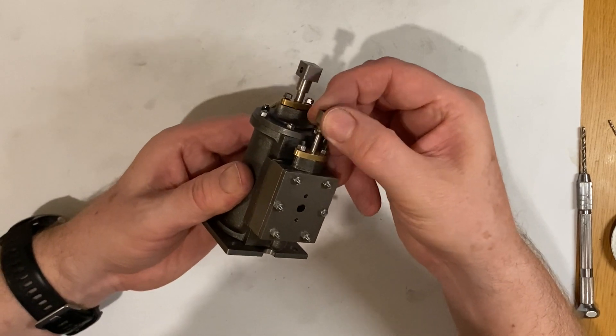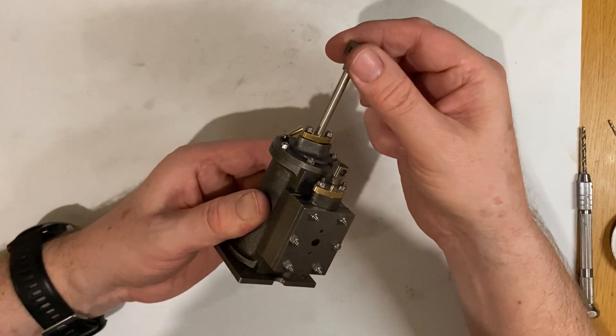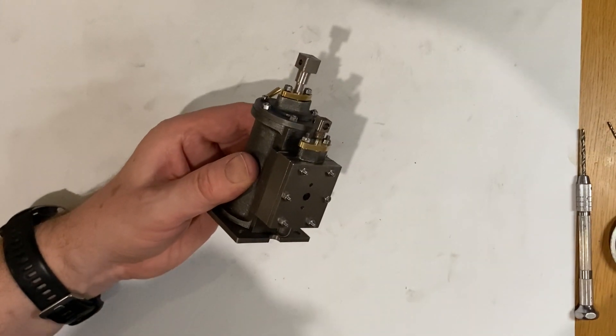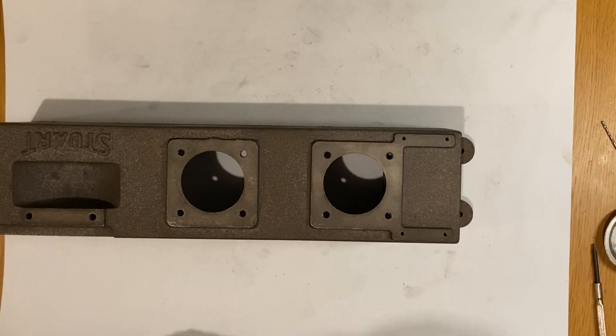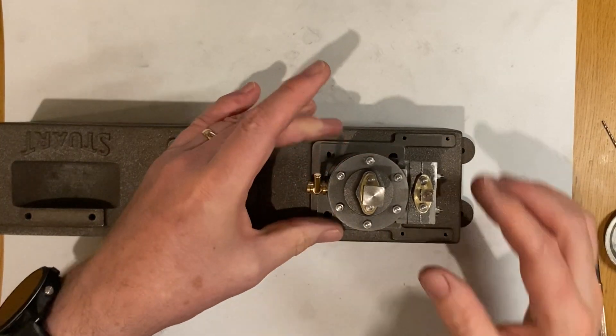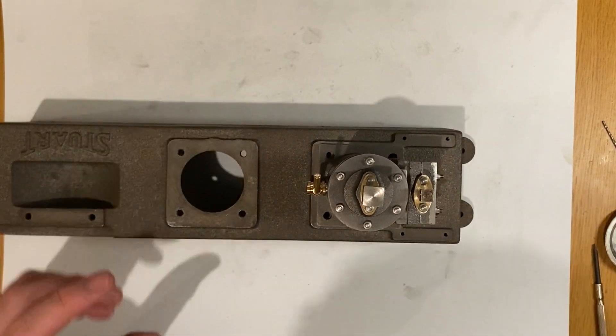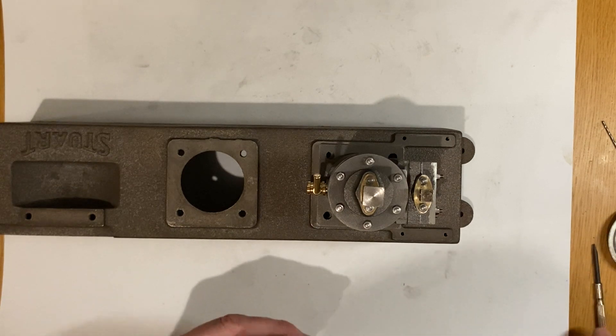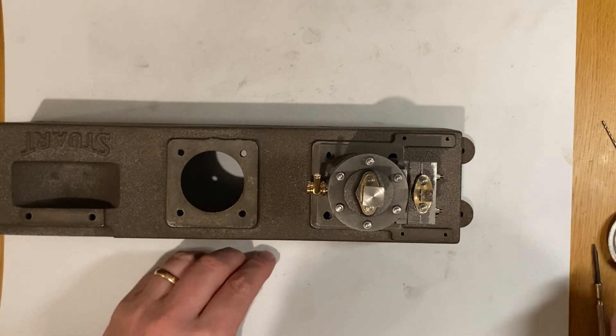And this is our completed piston and valve assembly and both the valve and the piston rods move nicely. Now we can take the base and we can fit the cylinder and valve assembly. This locates here and is fitted with four 2BA screws.